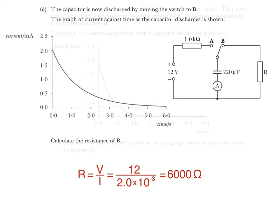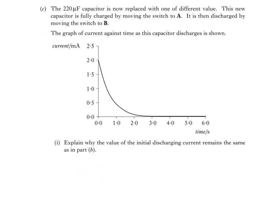Here's the final part. The 220 microfarad capacitor is now replaced with one of different value. This new capacitor is fully charged by moving the switch to A, then discharged by moving the switch to B. The graph of current against time as this capacitor discharges is shown.